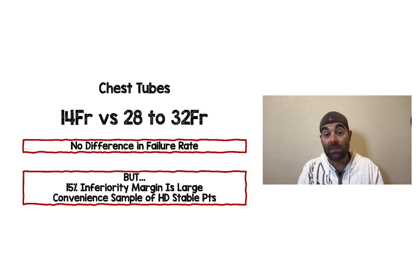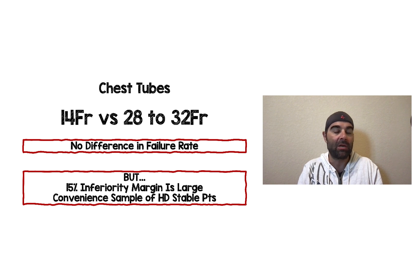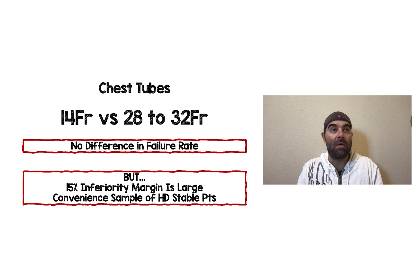My one issue with this study is that they set an inferiority margin of 15%, which is huge. If 13 or 14% of patients failed with the 14 French, that wouldn't meet the inferiority margin — and we're okay with that? I don't think so. The other issue is this was a convenient sample of patients — they cherry-picked who they enrolled. So is that going to be generalizable to all patients? I'm always advocating for smaller chest tubes, but I don't think we're quite ready for 14 French in all patients. This needs to be a conversation with your trauma surgeon about what standard care is at your institution.